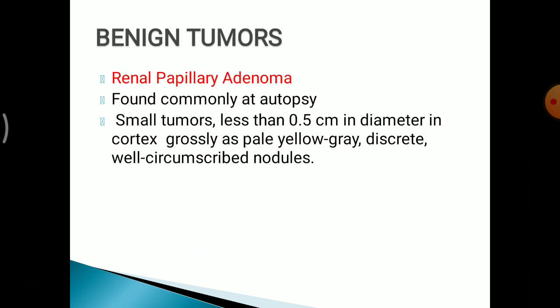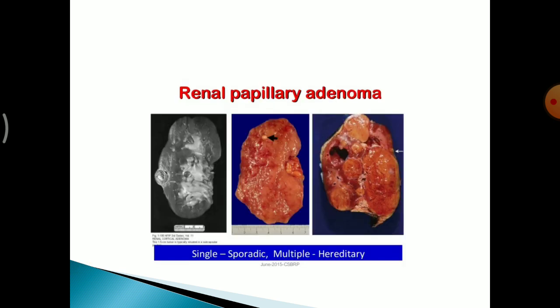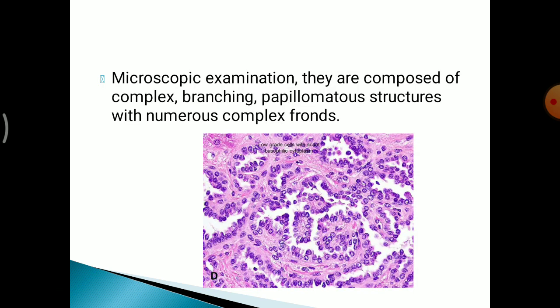The benign tumours. Renal papillary adenoma is the most common benign tumour and is commonly found at autopsy. They are small tumours, less than 0.5 cm in diameter, situated in the cortex. Grossly, it is pale yellow-grey, discrete and well circumscribed nodules. Microscopic examination shows complex branching papillomata structures with numerous complex fronds with no nuclear atypia.